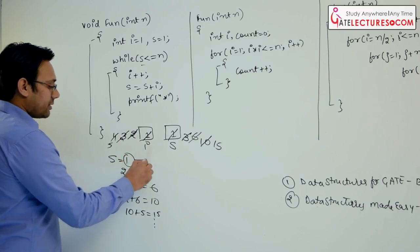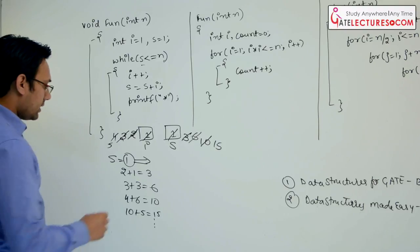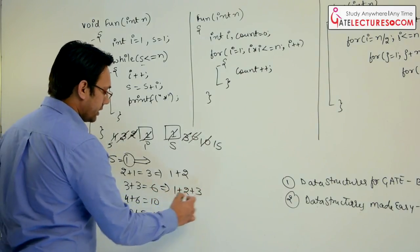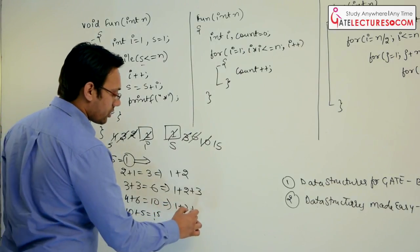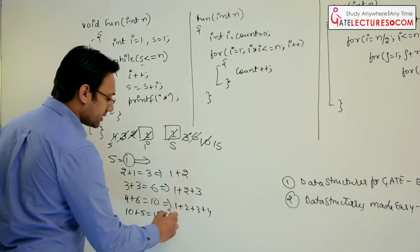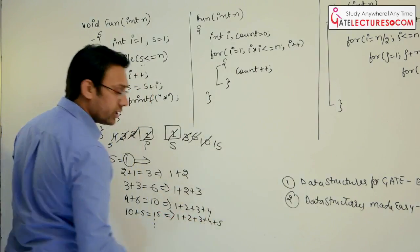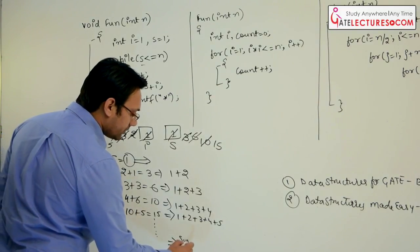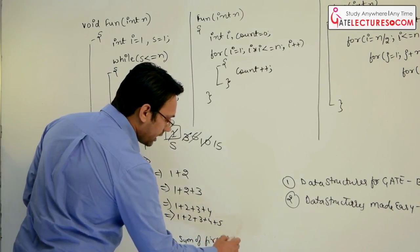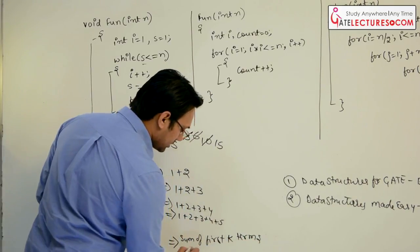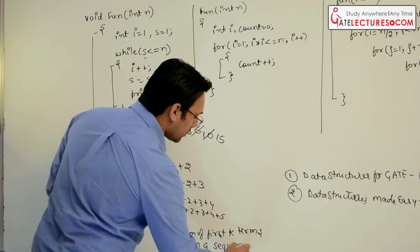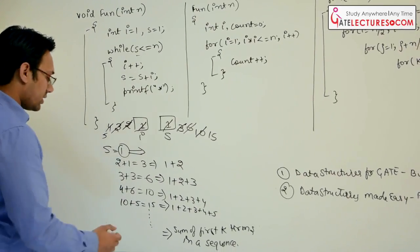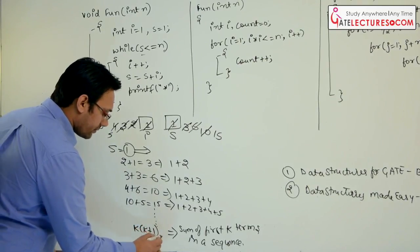If you see, the first term is the sum of the first one term in a sequence. The second term is the sum of the first two terms. The third term is the sum of the first three terms. The fourth term is the sum of four terms. The fifth term is the sum of the first five terms. In the same way, if we keep incrementing, at some point it becomes the sum of first k terms in a sequence.